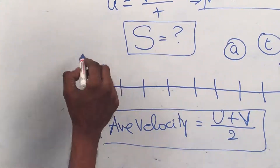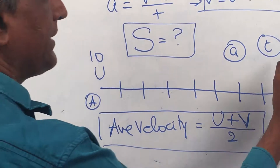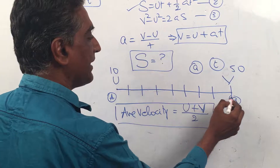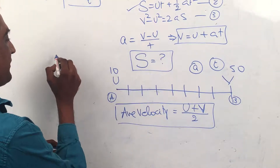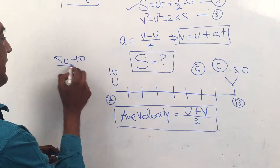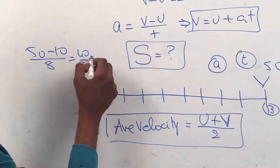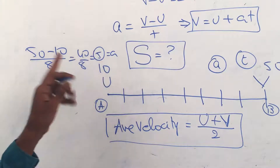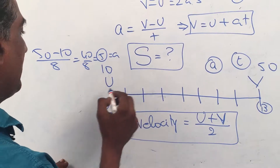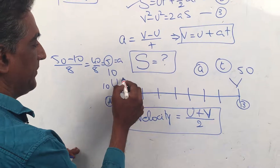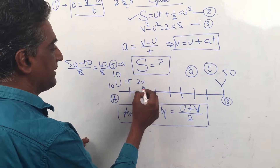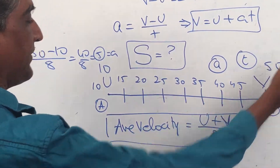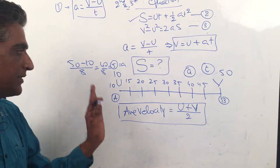For example, it started at u = 10 and reached v = 50 in t = 8 seconds. So a = (50 - 10) / 8 = 40 / 8 = 5 m/s². The velocity went: 10, 15, 20, 25, 30, 35, 40, 45, 50 — increasing by 5 each second.